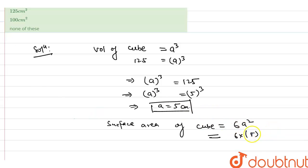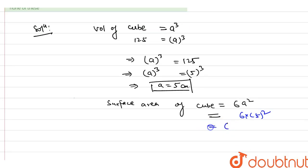Sorry guys, 6 into a squared, which is 5 squared. So what will be 6 into 25? This will be 150 centimeter squared, and this will be our answer.